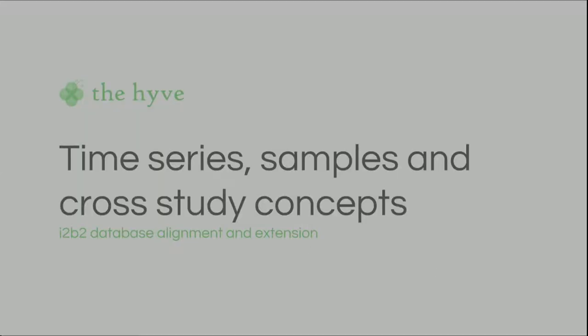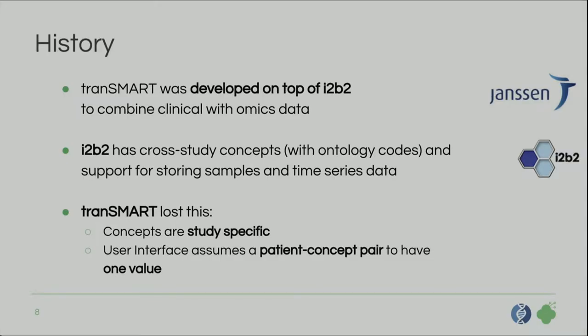The first functional improvement: time series, samples, and cross-study concepts — this is the big one, the main one. We're aligning with I2B2 again to make that possible, and we're even extending the I2B2 data model a little bit. Transmart was developed on top of I2B2 to combine clinical data with omics data. I2B2 had all these nice things like cross-study concepts and support for storing samples and time series. But we lost this in Transmart because we went quite study-specific.